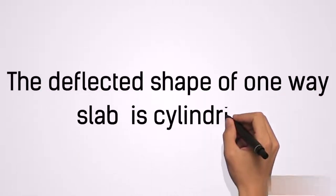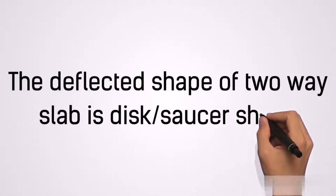The deflected shape of one-way slab is cylindrical, while the deflected shape of two-way slab is disc or saucer shape.